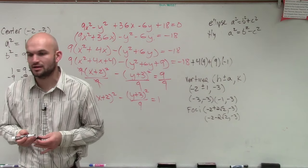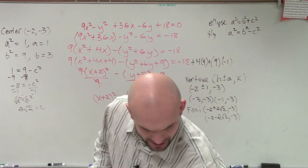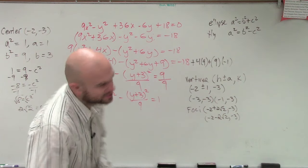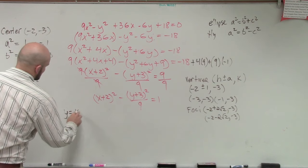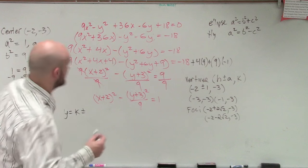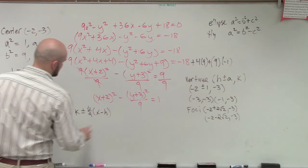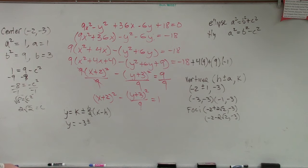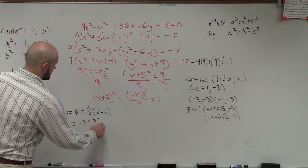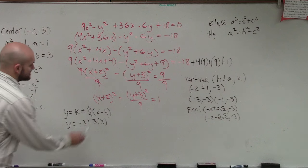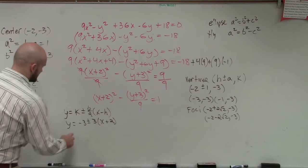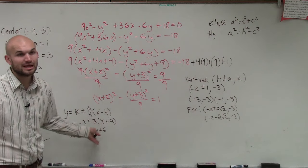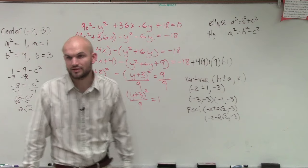I don't have time to fully go over the asymptotes, but you guys have the formulas. Since this is a horizontal hyperbola, we have y equals k plus or minus b over a times x minus h. So plugging in our values: y equals negative 3 plus or minus 3 over 1 times x minus negative 2, which gives y equals negative 3 plus or minus 3 times x plus 2. Distributing: y equals negative 3 plus or minus 3x plus 6. So you'll have two linear lines.